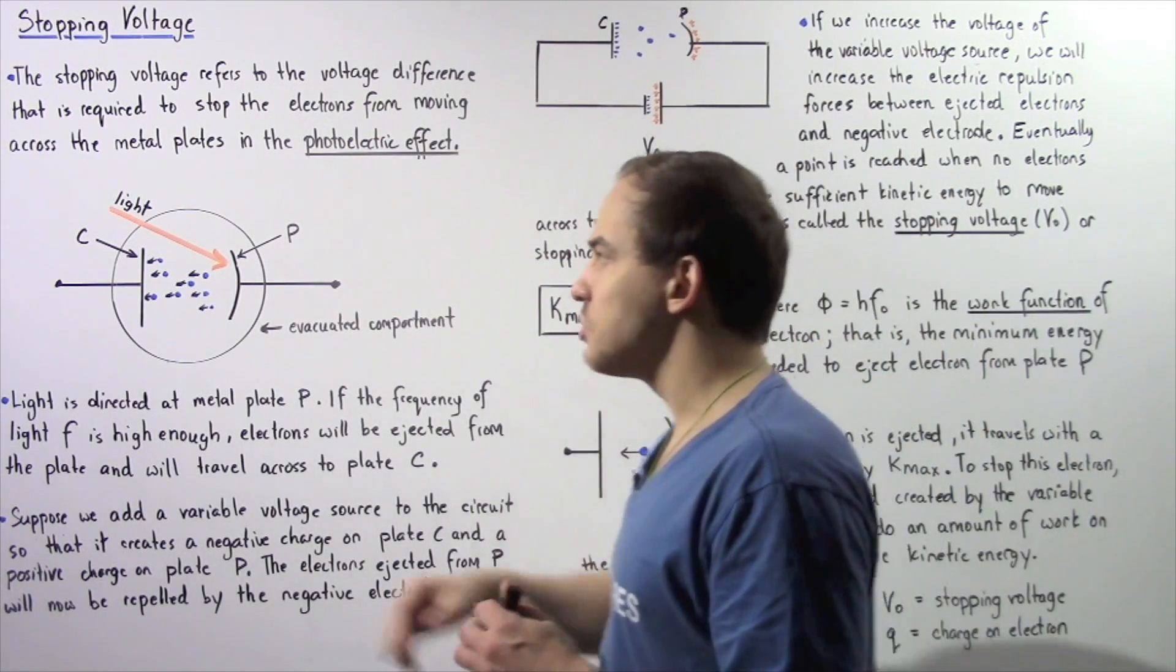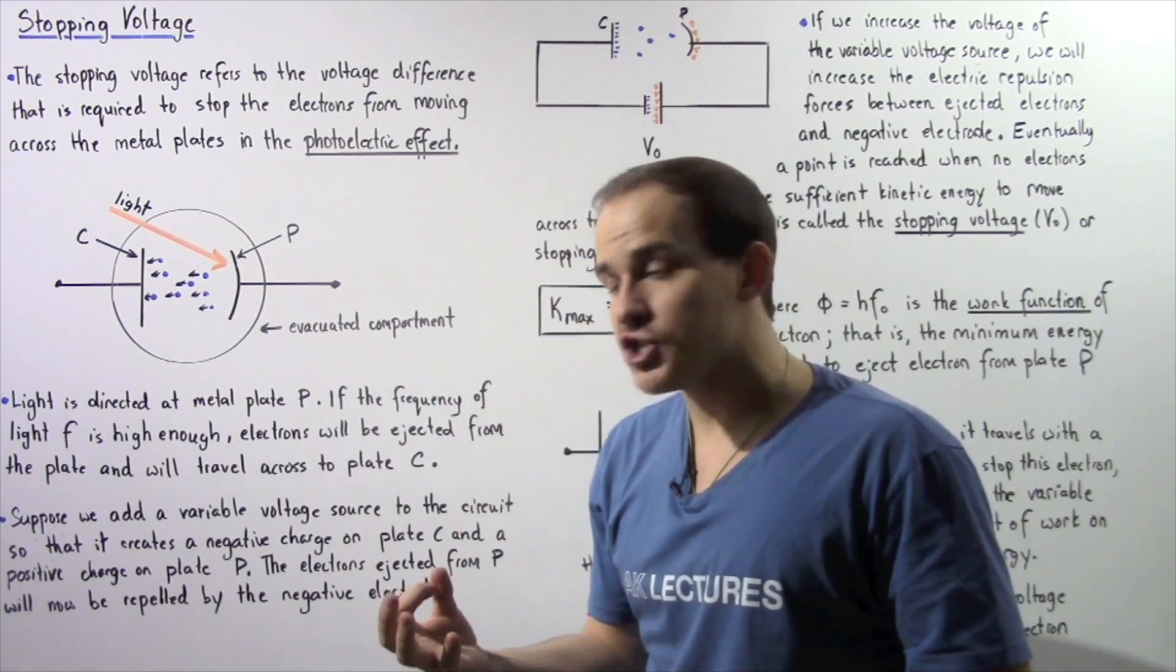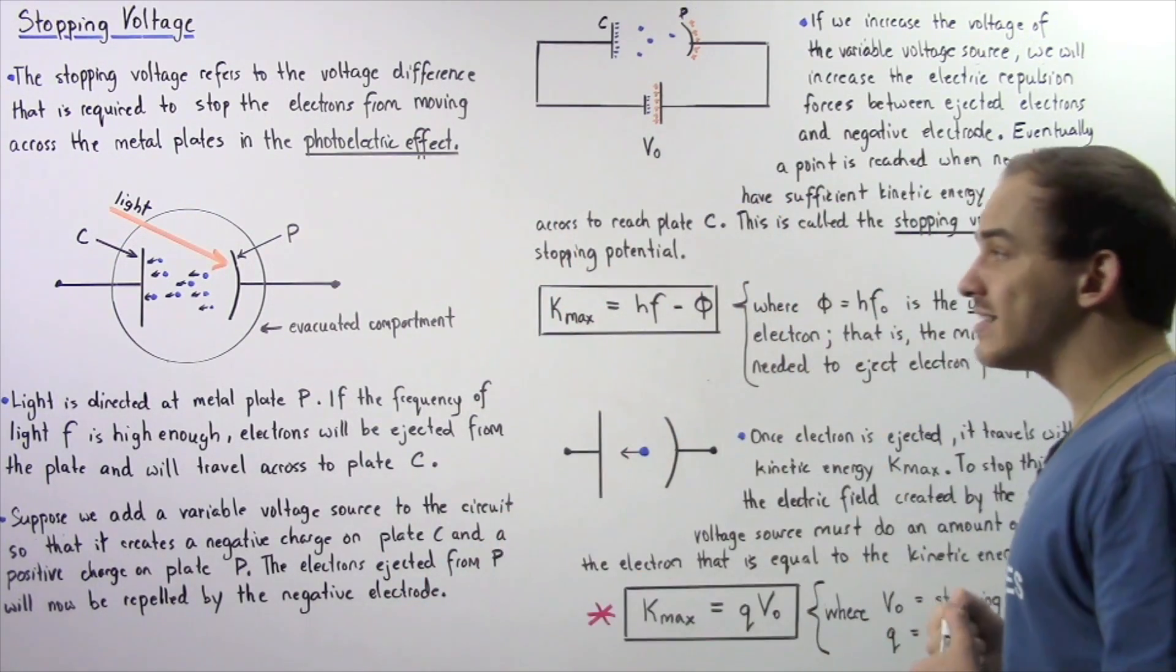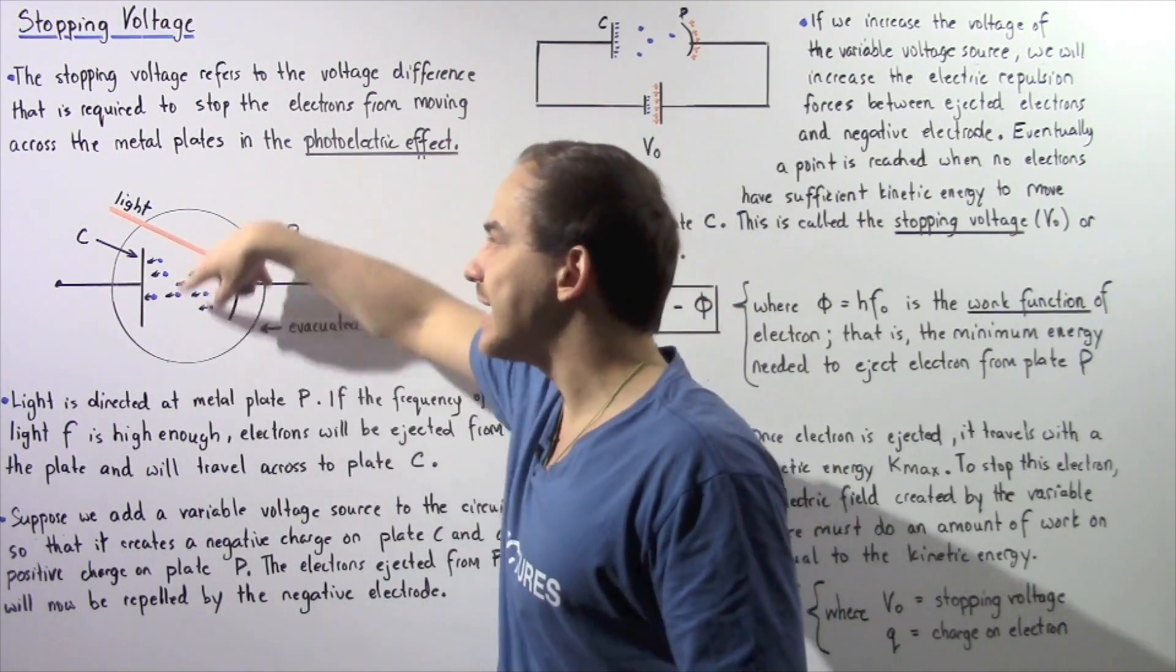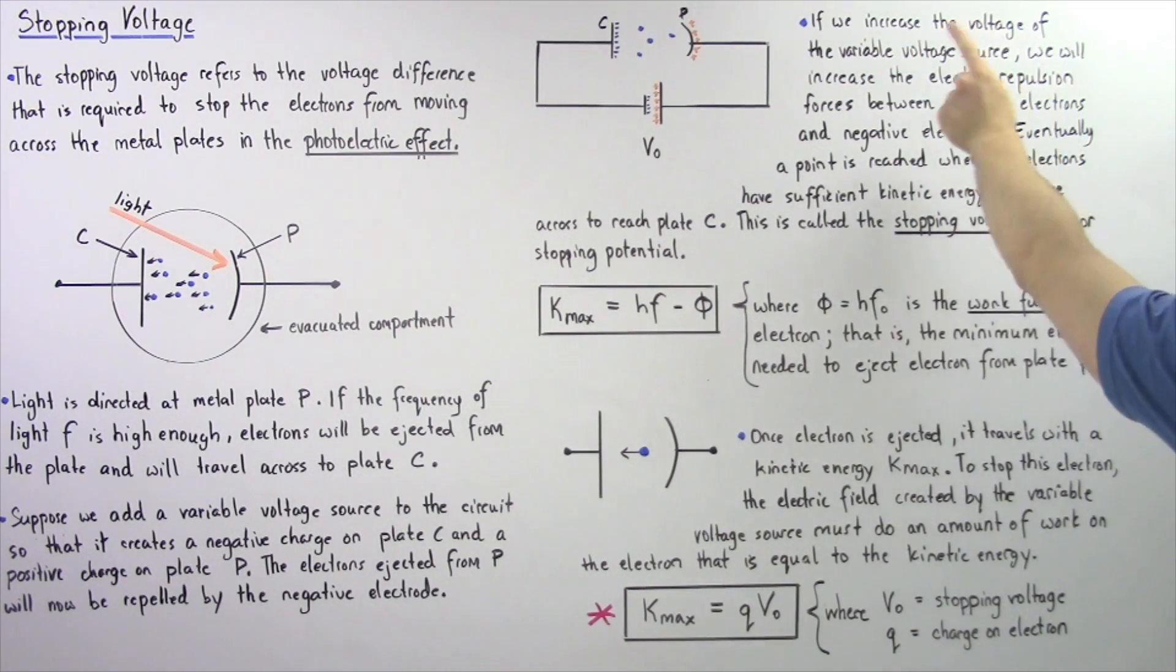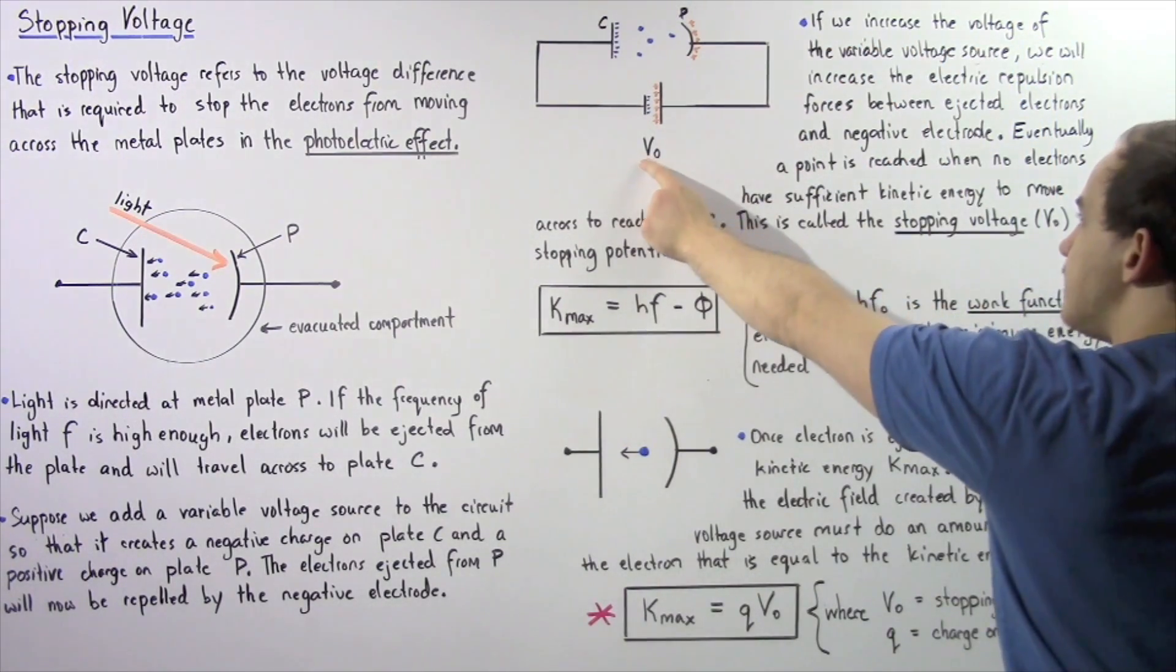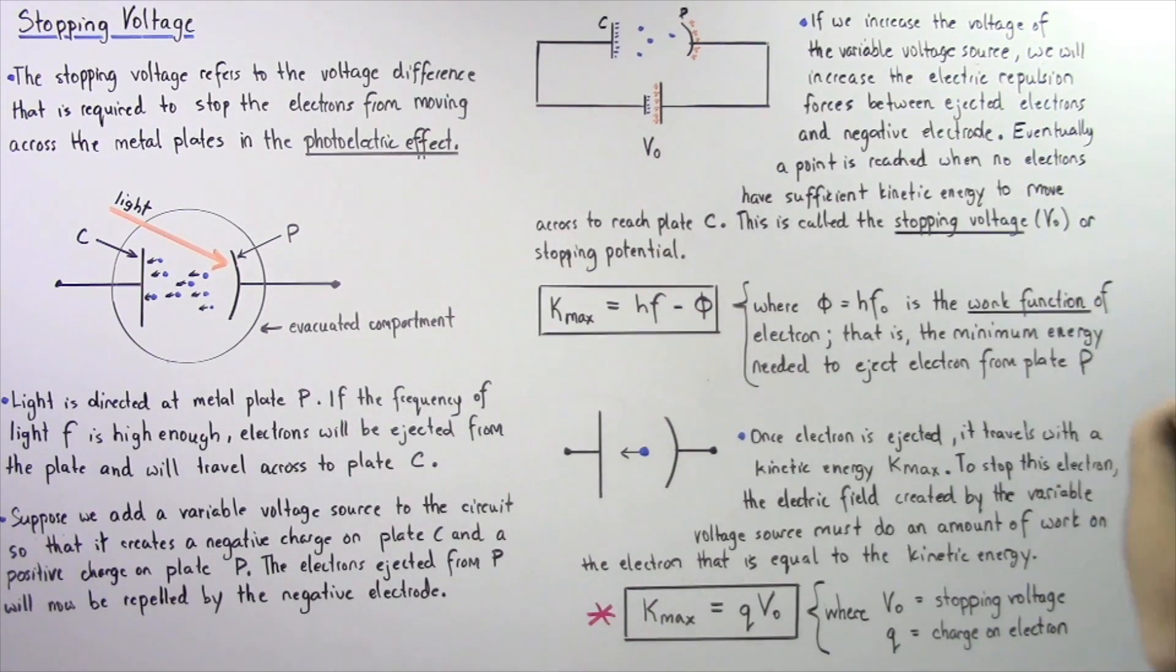Now, because of this negative charge on plate C and because each electron carries a negative charge, those ejected electrons will be repelled as a result of that negative charge. Now, if we increase the voltage source of the variable voltage source, if we increase V0, we will increase the electric repulsion forces between ejected electrons and the negative electrodes.